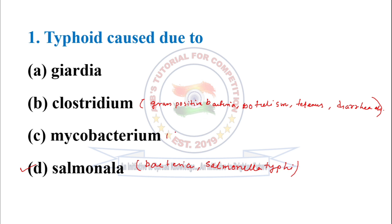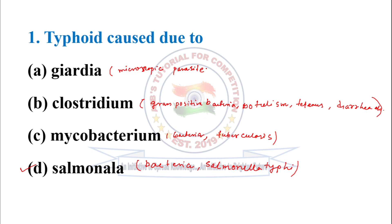Mycobacterium is also a bacteria, responsible for tuberculosis. There is also a parasite responsible for giardiasis, which is a diarrheal disease.